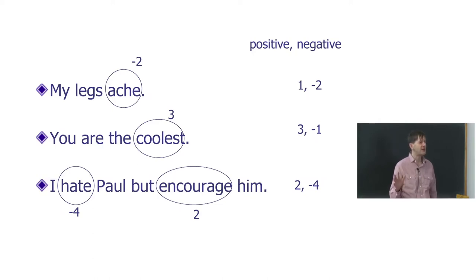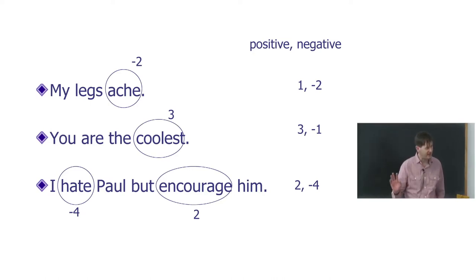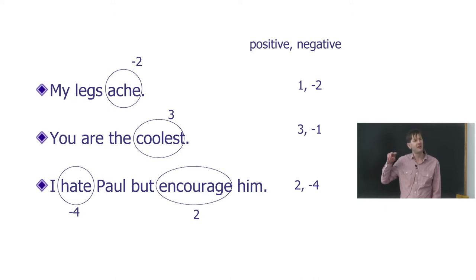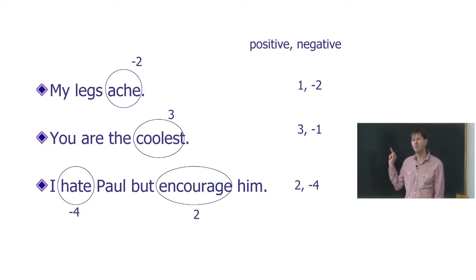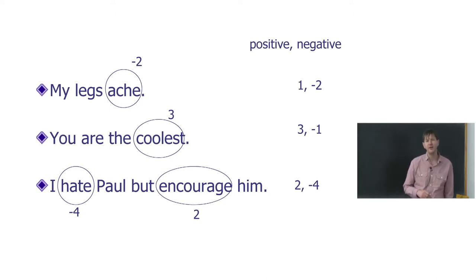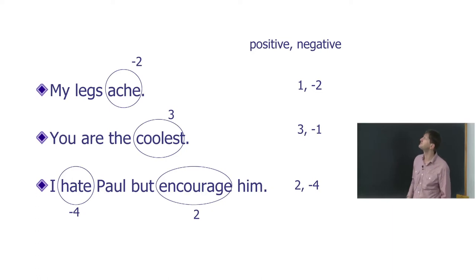Please feel free to ask questions while I'm going through. Here are some examples. For the sentence 'my legs ache,' SentiStrength reads the words: 'my' isn't in the dictionary, 'legs' isn't in the dictionary, but 'ache' is — it's a minus two word. So the overall score will be positive one, negative two. The minimum score is always one for positive and minus one for negative, so we don't give a zero score. This is mildly negative and not positive at all.